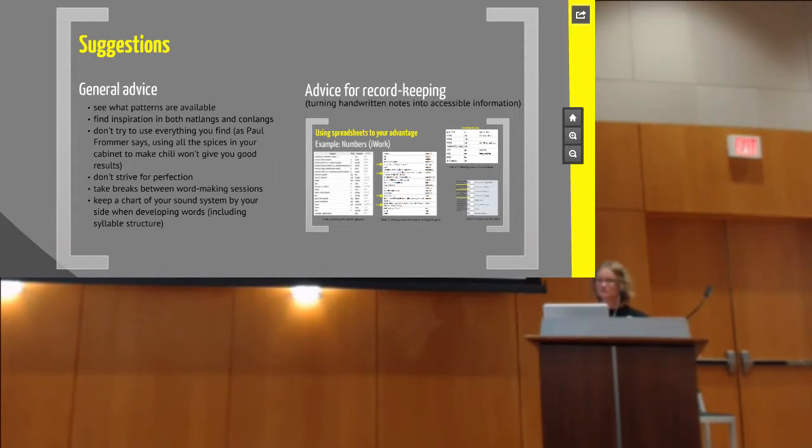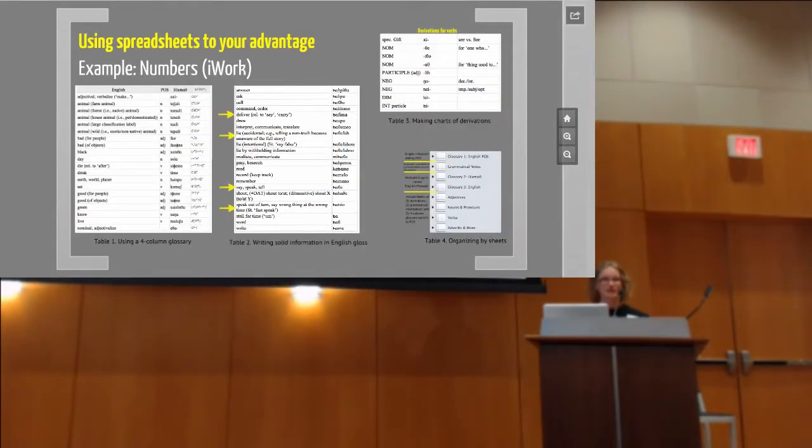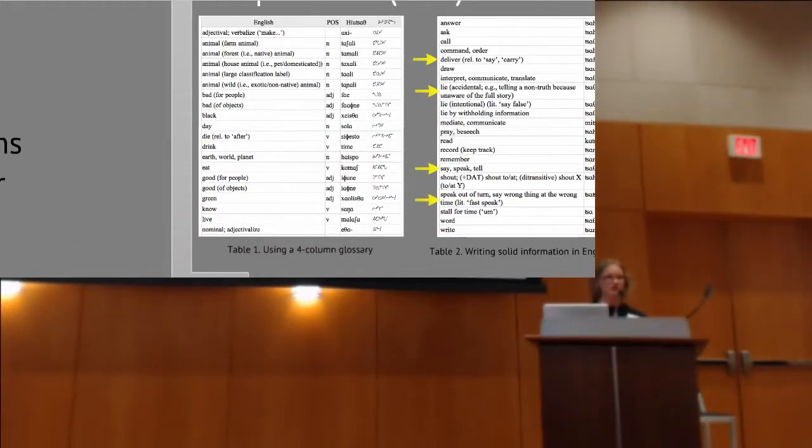And then always keep a chart of your sound system handy. And if you do need to change it, make changes on the chart so you remember to actually update it. But keeping that right beside you after making words, I feel, is a very important thing to do. And then also keep really good records of what you do. And so I tell my students to use a spreadsheet to your advantage. I'm a Mac user, which apparently some people are already taking issue with. But I don't like Excel at all. And so I use Numbers, which I think is far superior, but you can argue with me on that later.